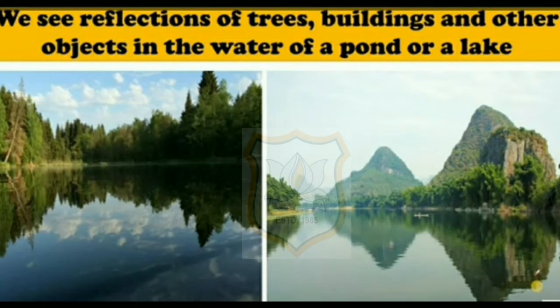Our last topic of this chapter is about mirrors and reflections. We all use mirrors at home. You look into the mirror and see your own face — what you see is a reflection of your face in the mirror. We also see reflections of other objects in front of the mirror. Sometimes we see reflections of trees, buildings, and other objects in the water of a pond or a lake.